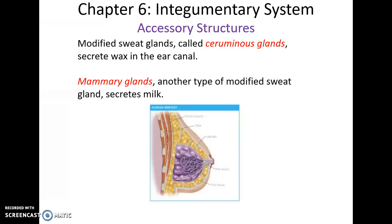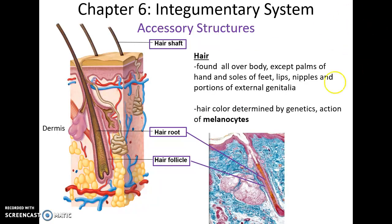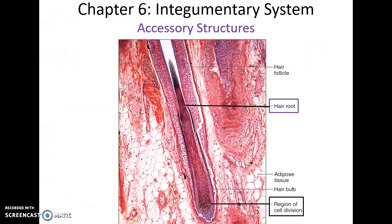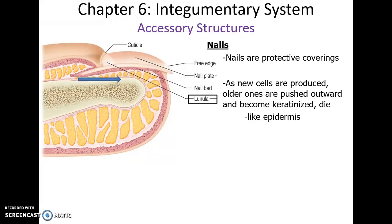Mammary glands are also modified types of sweat glands; they instead produce milk important for infants. Hair is also an accessory structure. You have the hair root within the hair follicle in the dermis, going through the epidermis, and then the hair shaft — the part exposed on the outside. The hair's color is produced by pigments from melanocytes found at the very base of the hair. The hair grows just like the epidermis: cells divide near the base of the hair root and then get pushed up and die as they head toward the surface.